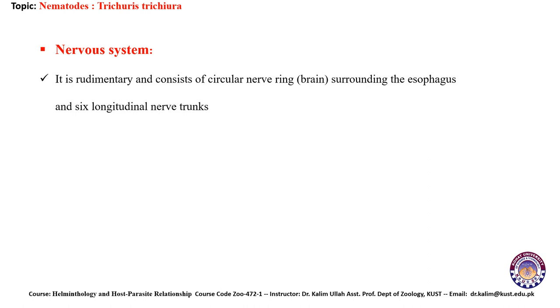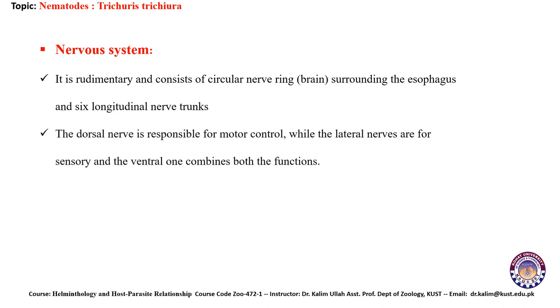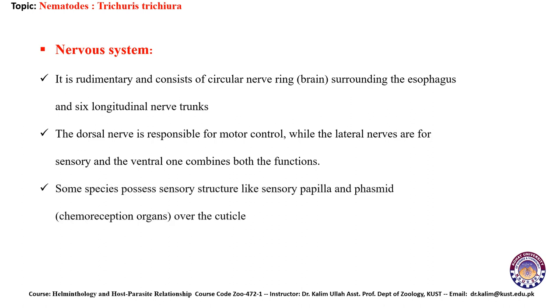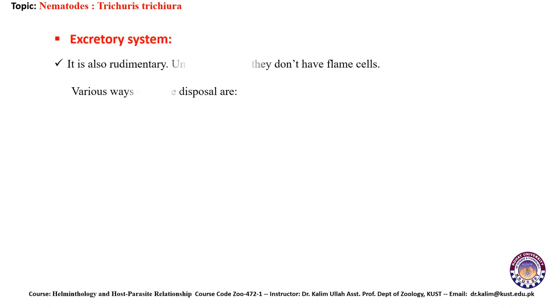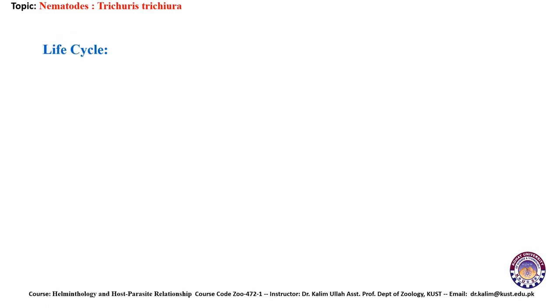The nervous system is rudimentary and consists of a circular nerve ring surrounding the esophagus and six longitudinal nerve trunks. The dorsal nerve is responsible for motor control, the lateral nerves for sensory function, and the ventral one combines both functions. Some species possess sensory structures like papillae and phasmids, which are chemoreception organs on the cuticle.